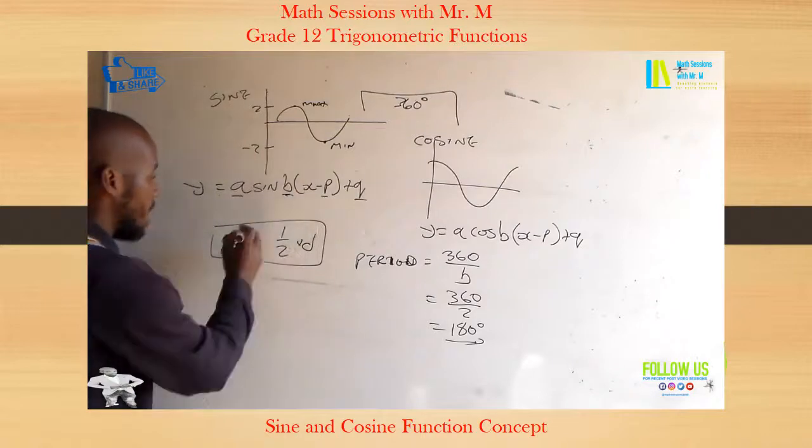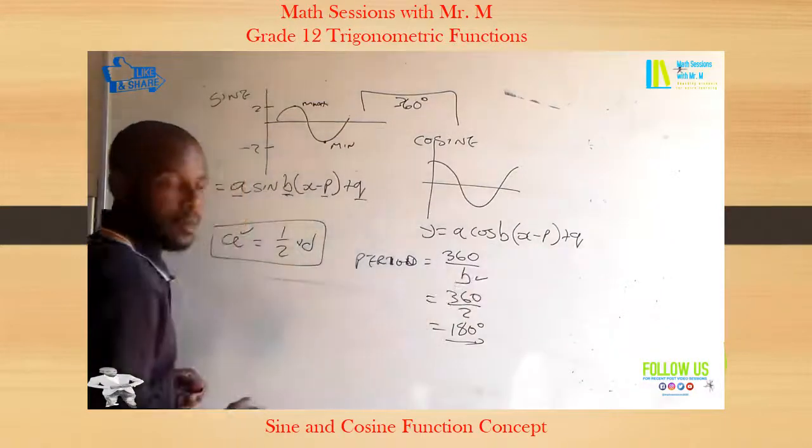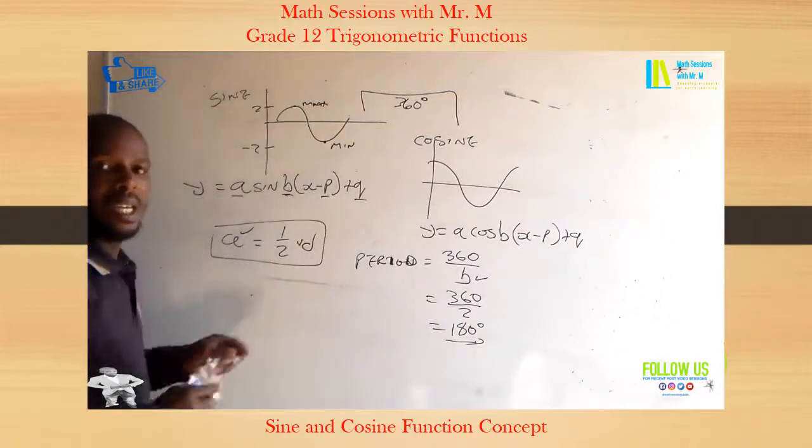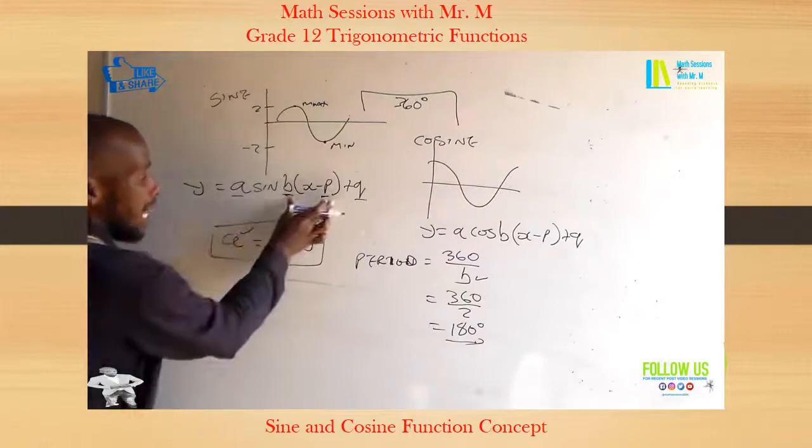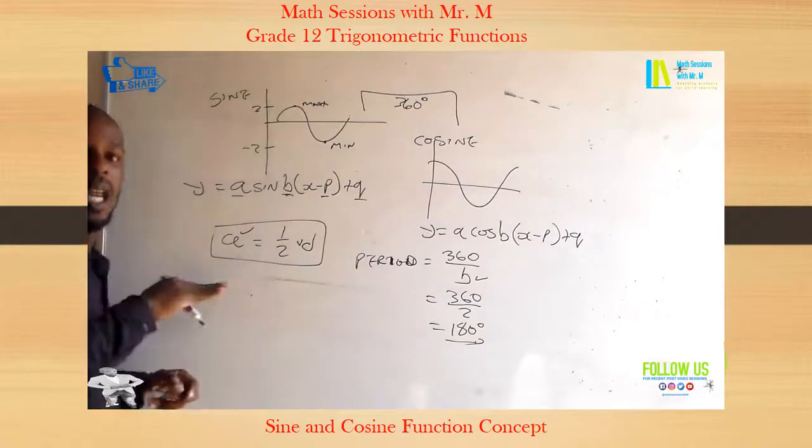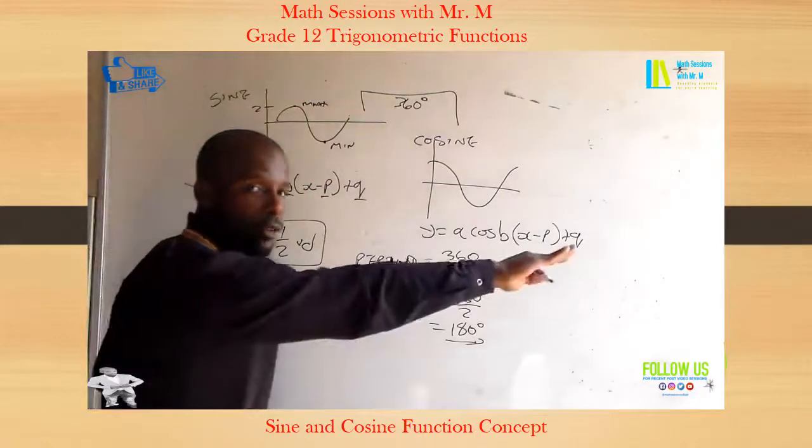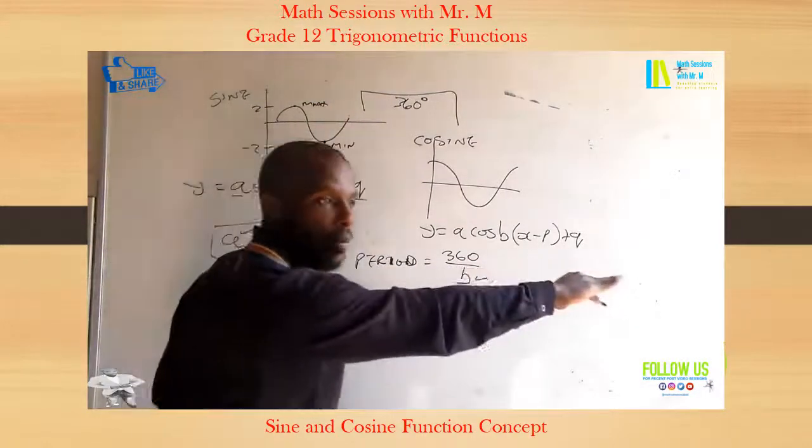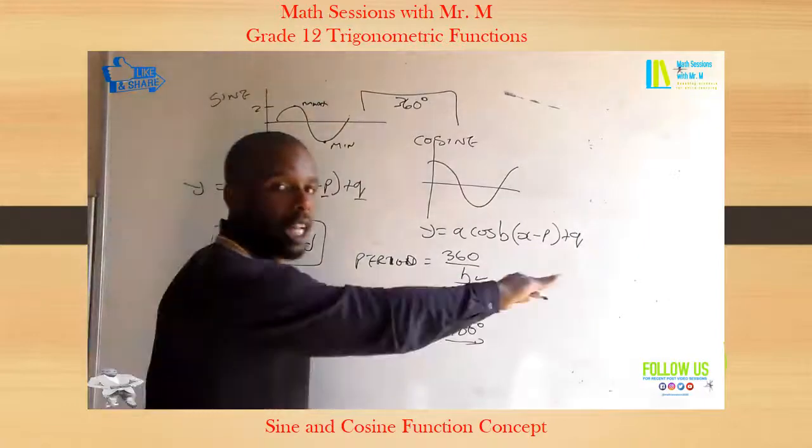Now we have covered A and we have covered B. Let us explain P. Now P, because it's right here subtracting at x, that is a horizontal shift of the graph, the moving of the graph on a horizontal plane.